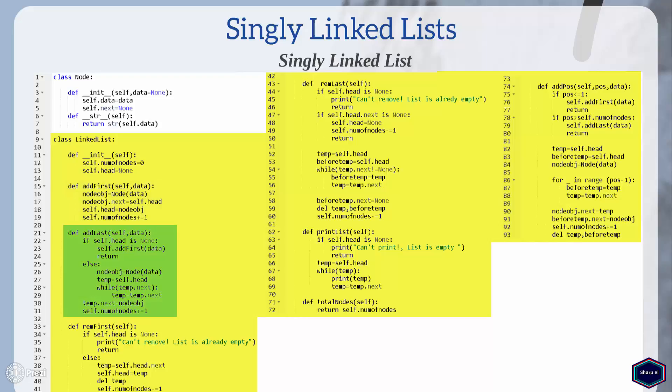The add_last method is very similar to the add_first method. In this method I first check if the list is empty; if yes, then the new node is also the first node in the list, so I call the add_first method. If the list is not empty, then I search for the last node and set its next attribute to the new node object, and then I increase the number of nodes by one.